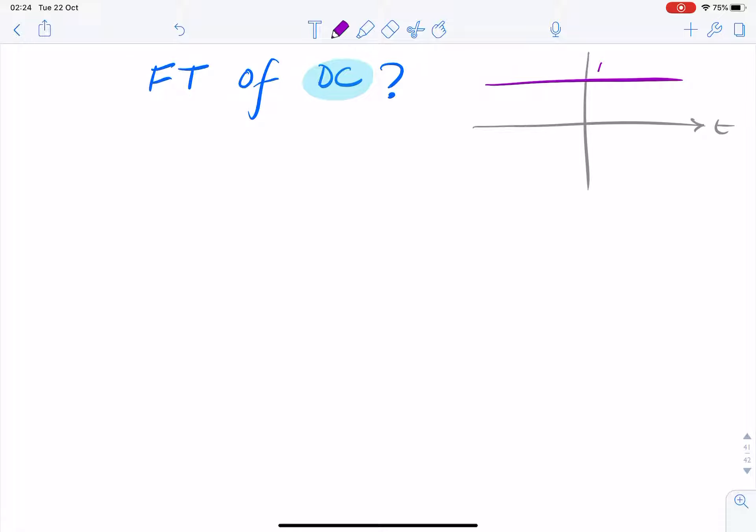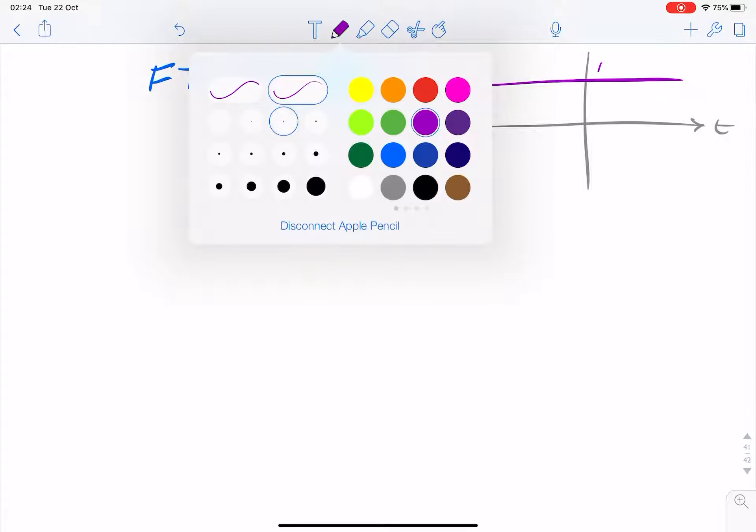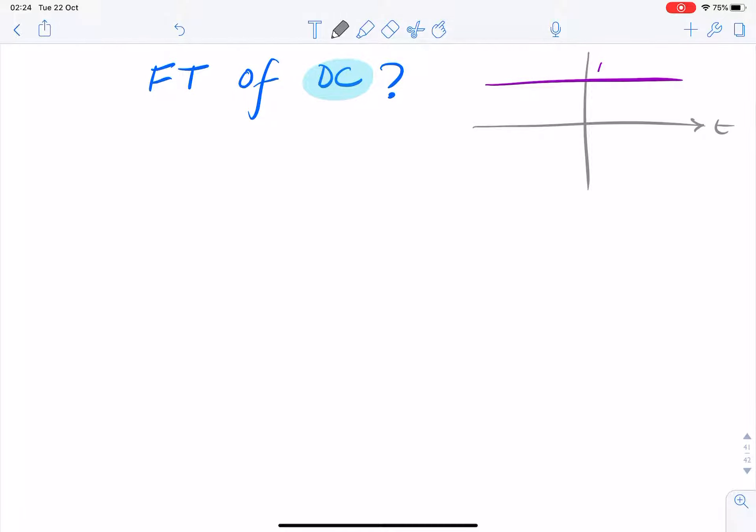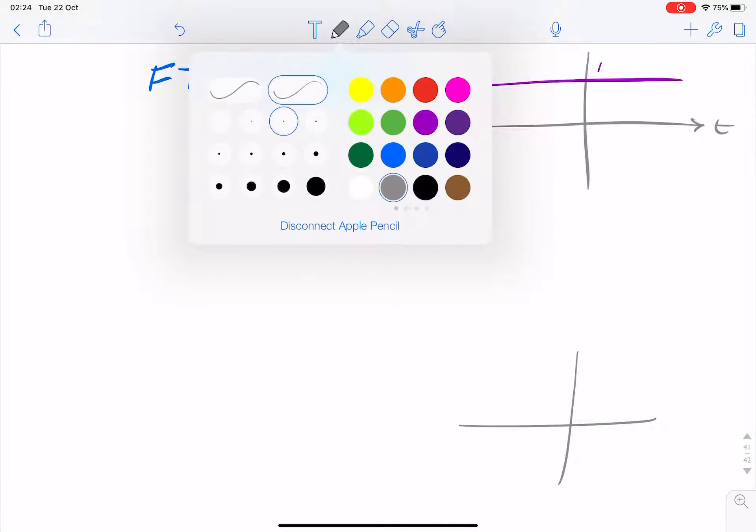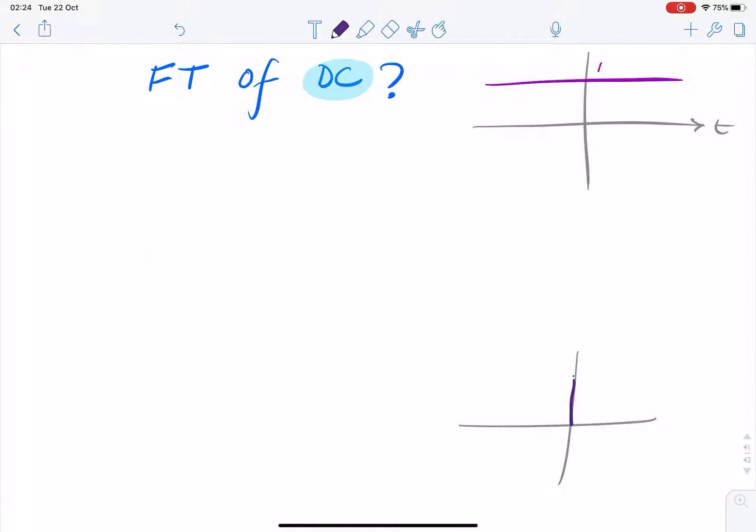So intuitively, we know the answer should be an impulse at zero hertz. We sort of expect the answer should look something like this because of what we know from Fourier theory.